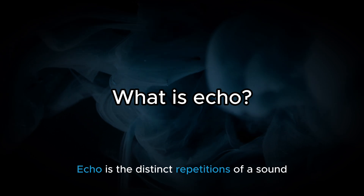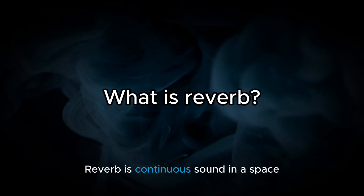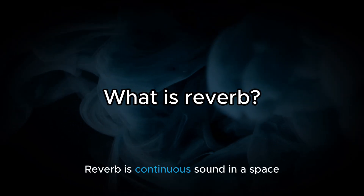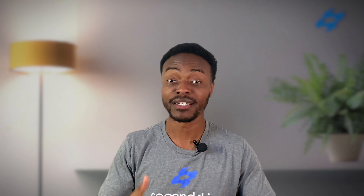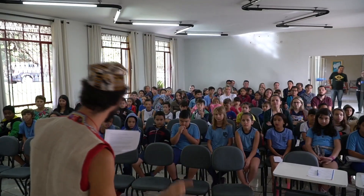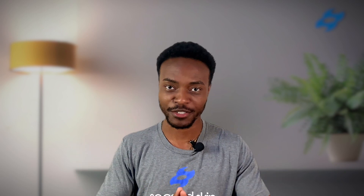Echo is the distinct repetitions of a sound that you would hear in a space — if you've ever been in a cave, that's an example of echo. Reverb is continuous sound within a space without distinct repetitions, making that sound harder to understand. Imagine being in a classroom or auditorium where bad acoustics make it harder to make out what the speaker is saying — that's reverb causing issues.